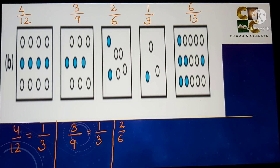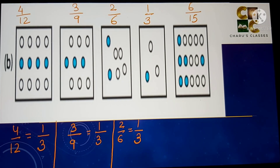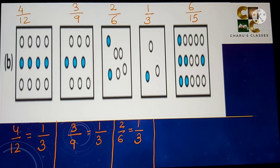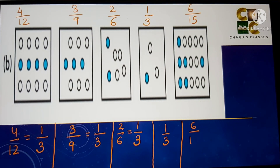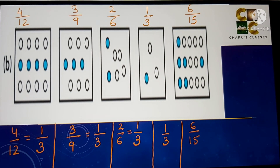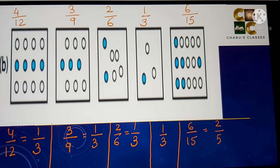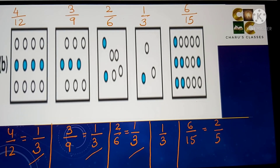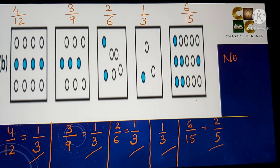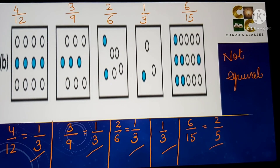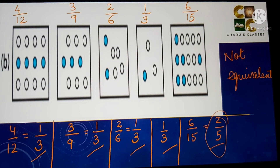2 by 6 simplifies to 1 by 3 as well. 1 by 3 is already in simplest form. For 6 by 15, both come in the table of 3, so dividing by 3 gives 2 by 5. Since 1 by 3 is coming for four of them but the last one gives 2 by 5, these are not equivalent fractions.